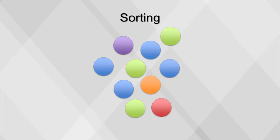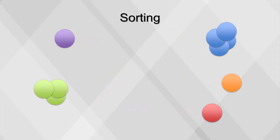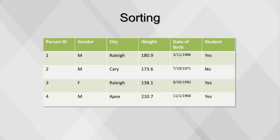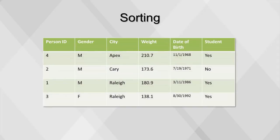The next step is sorting. When we sort, we rearrange a table by ordering the rows according to the values of one or more fields, in either ascending or descending order. Here's our original data set, sorted by date of birth in ascending order. Here we've sorted by city in ascending order and then by weight in descending order.